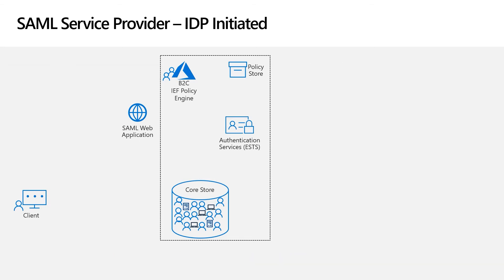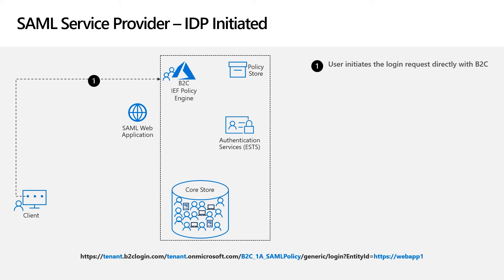Now let's talk about the SAML IDP initiated flow, which is very similar to the SP initiated flow. The one exception is that the application does not generate a request. Instead, the user goes to the generic endpoint to initiate the sign-in process. This also means the web application needs to be able to accept a token issued by B2C that was unsolicited by the application. The user goes to the generic endpoint, and part of that URL includes the policy and the entity ID, which in the SP initiated case would be part of the request.